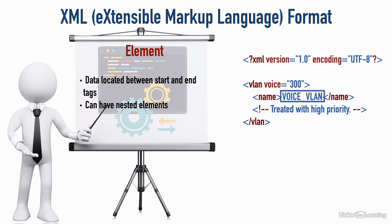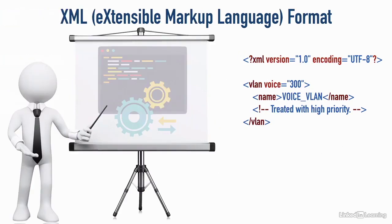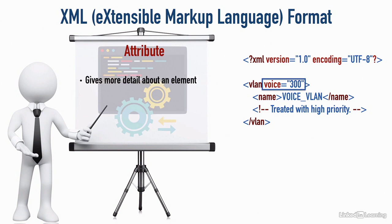Now let's look at the VLAN start tag where it says voice equals 300 in quotes. What is going on there? That is an attribute. The voice equals 300 in quotes is an attribute, and an attribute gives us more detail about an element. The value of this attribute is 300, and it has to be in quotes.